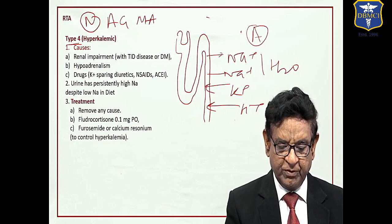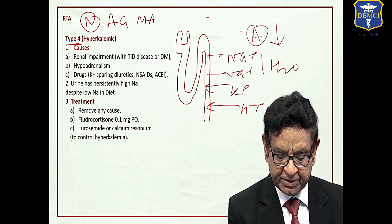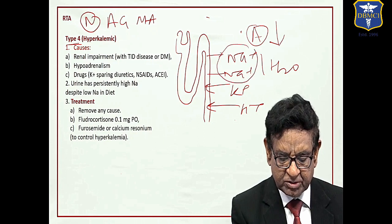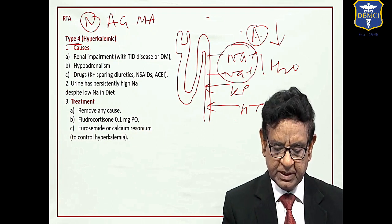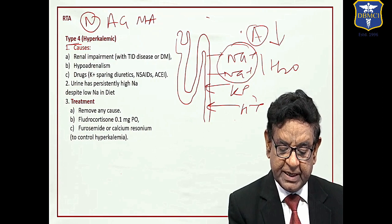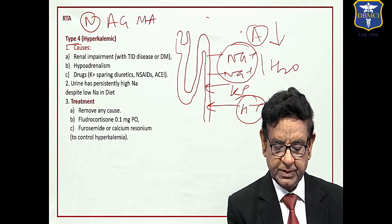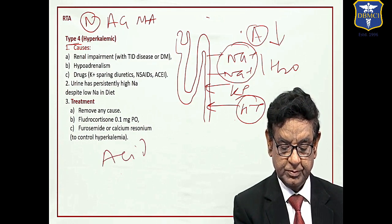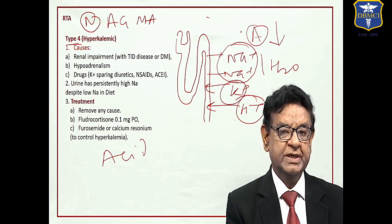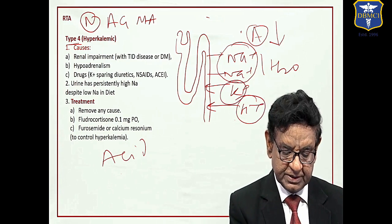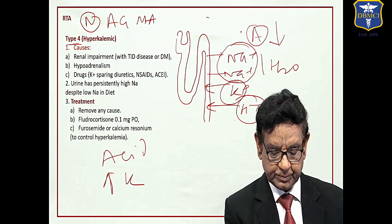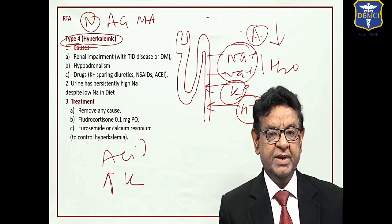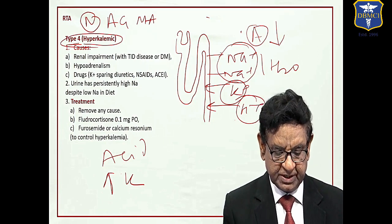In RTA type 4, aldosterone level is reduced, with result lesser amount of sodium will be reabsorbed. H ion will stay in the body, it will lead to acidosis. Potassium will also remain in the body that leads to hyperkalemia. We get hyperkalemia in type IV RTA which is the hallmark of this condition.